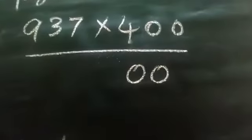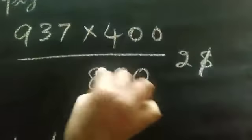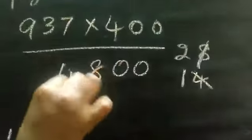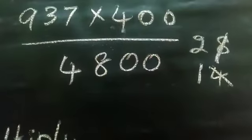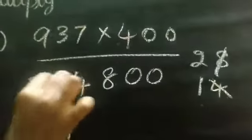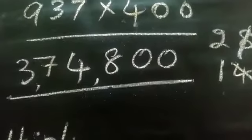So 4. 4 times 7 is 28. So 2 is carry over. 4 times 3 is 12. 12 plus 2 is 14. So 1 is carry over. 4 times 9 is 36. 36 plus 1, 37. So answer is 374,800.